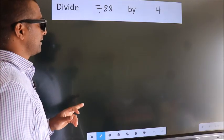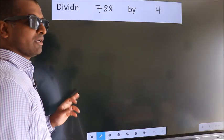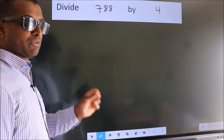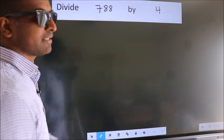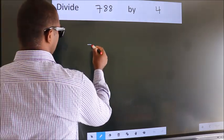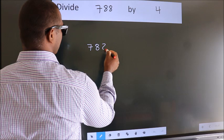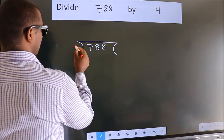Divide 788 by 4. To do this division, we should frame it in this way. 788 here, 4 here.